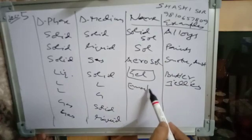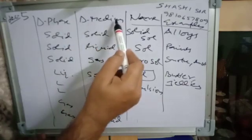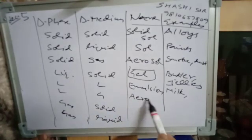In an emulsion, the disperse phase is liquid and the disperse medium is also liquid — disperse phase is the lesser amount (solute) and disperse medium is the greater amount (solvent). Liquid in gas (aerosol): examples include clouds, fog, and mist.